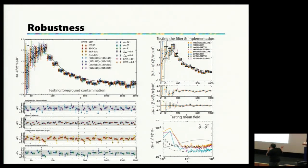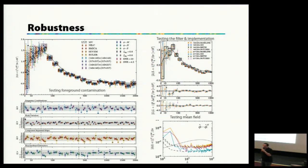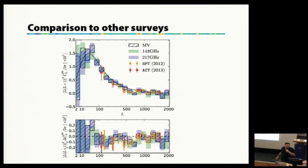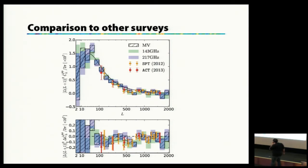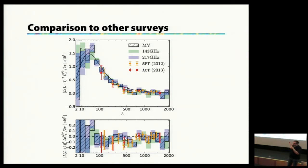We perform many robustness tests: changing the mask, changing the data set, using component-separation maps, changing the point-source mask — all in very good agreement. We also test different algorithms, different filters, and different sets of approximations, and they all agree. Comparing with SPT and ACT results, we are in reasonable agreement. SPT is already better at small scales, but in the future there will be nice complementarity between Planck at large scales and full sky, and ground-based data at smaller scales.